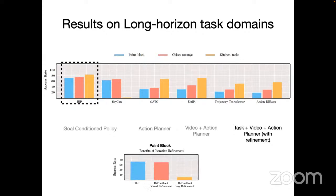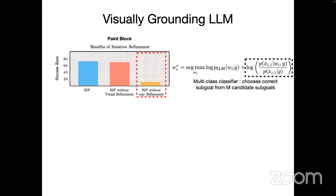The key benefit of iterative refinement is clear when you don't have visual refinement — selecting sub-goals blindly leads to many failure cases. Using a frozen VLM (mini GPT-4, used before GPT-4V was available) to ask questions like 'is a screwdriver in the brown box' or 'is this sub-task completed' enables classifier-free visual refinement that performs well on simpler paint-block tasks and reasonably on object-arrangement tasks.